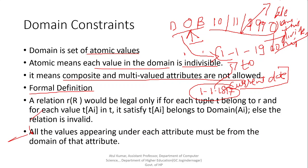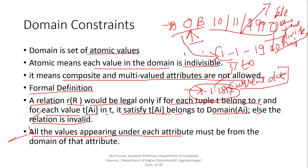The formal definition of the domain constraint rule: a relation R would be legal only if for each tuple t belonging to R and for each value t(Ai) in the tuple, it satisfies t(Ai) ∈ domain(Ai); otherwise the relation is invalid. For example, if we insert a date out of the defined domain for date of birth, it doesn't satisfy the domain of that attribute and hence the relation is invalid. All values appearing under each attribute must be from the domain of that attribute.